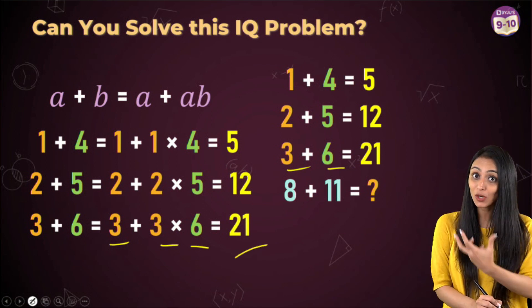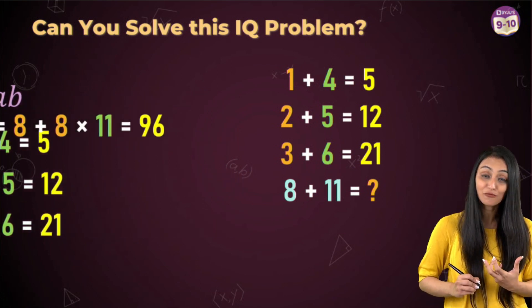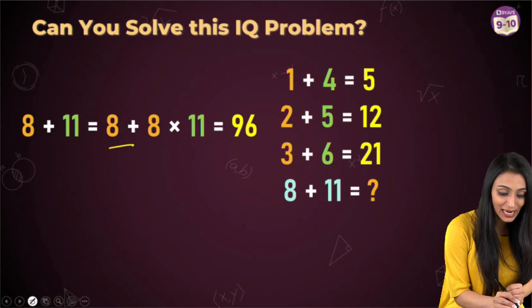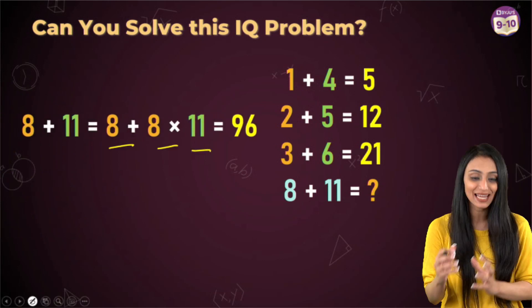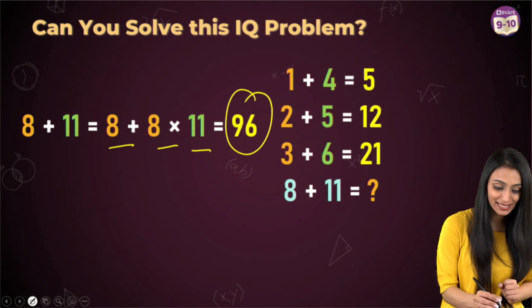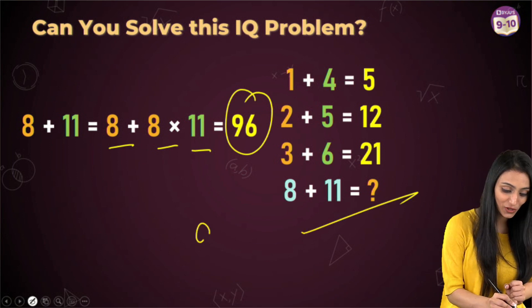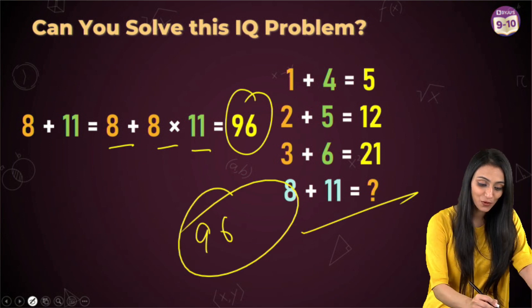So definitely this pattern is applicable on the three steps. So it will be applicable on the fourth step also. That's going to be 8 plus 8 times 11. So 8 plus 88, that's going to be 96. So the 8 plus 11 over here is going to be 96. That would be the result.